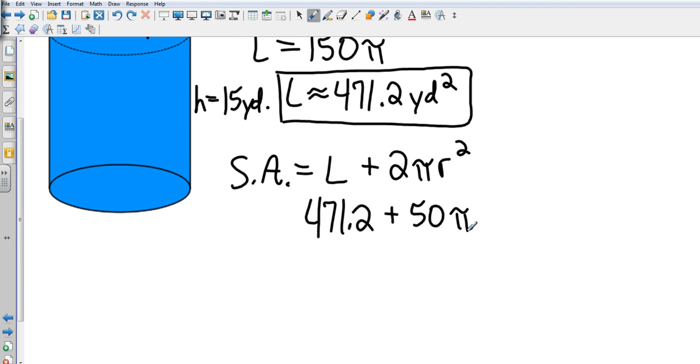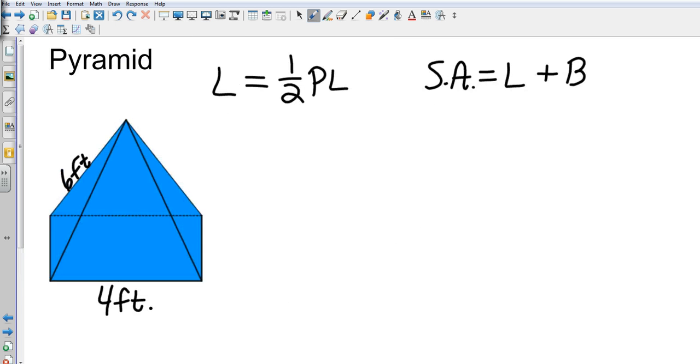So let me put that in the calculator, pi button times 50 equals, and then I'm going to add that to 471.2, giving me a grand total of, again, this is an approximation, 628.3 square yards. And that's for surface area. So that takes care of cylinders.